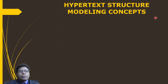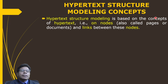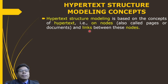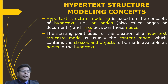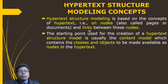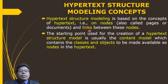Hypertext structure modeling is based on the concept of hypertext — that is, nodes, also called pages or documents in the web application, and links between these nodes. The starting point for creating the hypertext structure model is usually the content model, which contains the classes and objects to be made available as nodes in the hypertext.